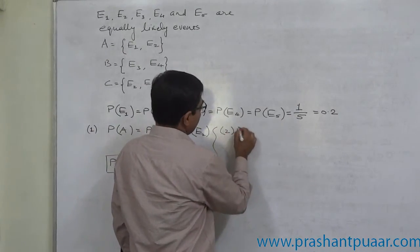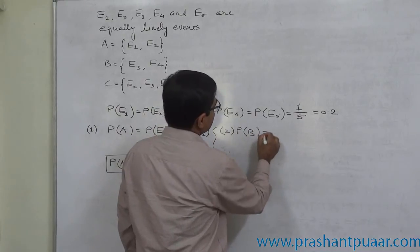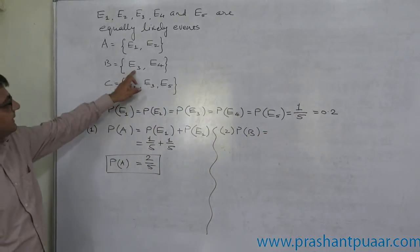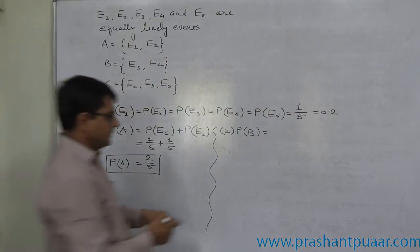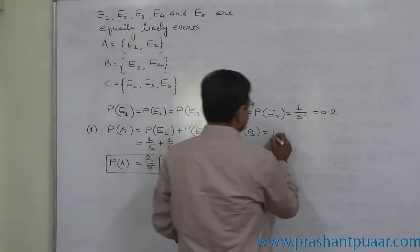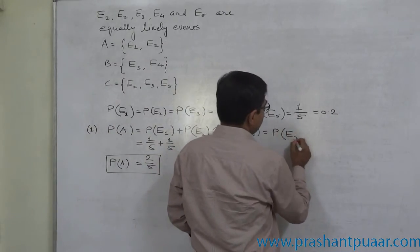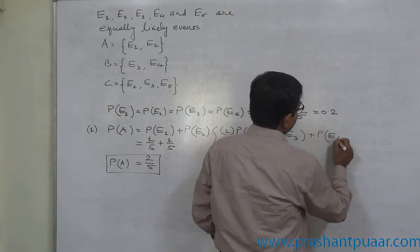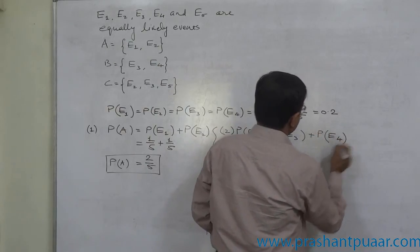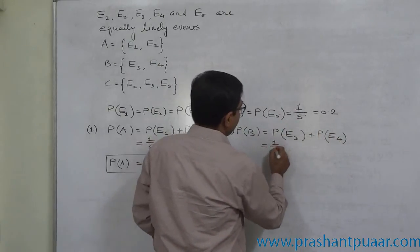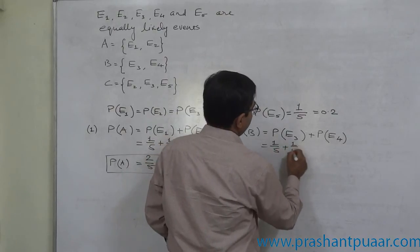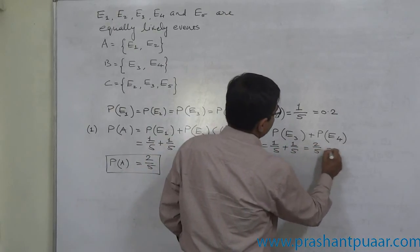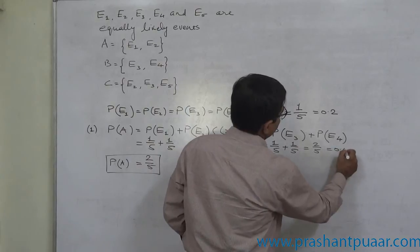Similarly, what is P of B? B is made up of E3 and E4. So it is P of E3 plus P of E4, again 1 by 5 plus 1 by 5, that is 2 by 5 or 0.4.